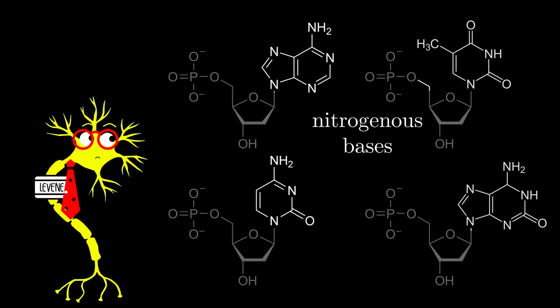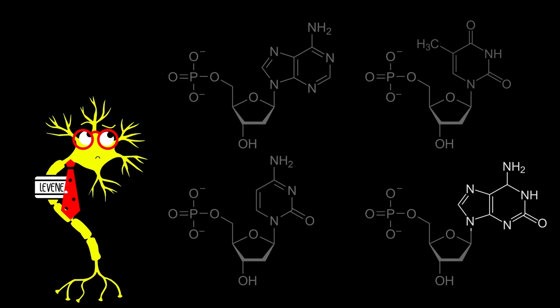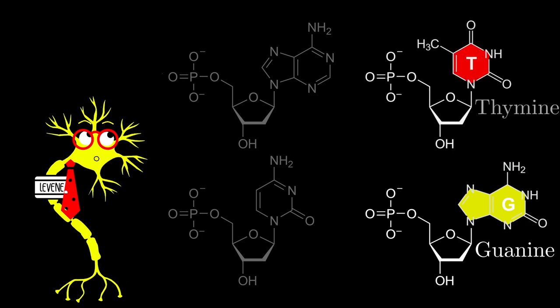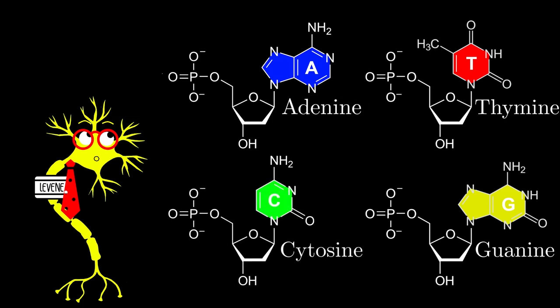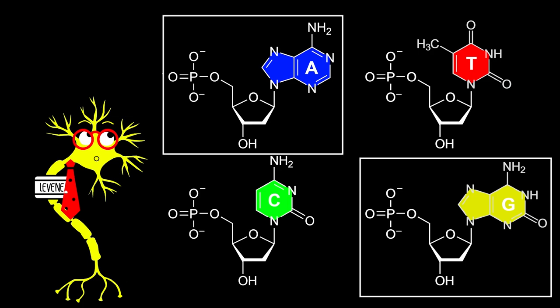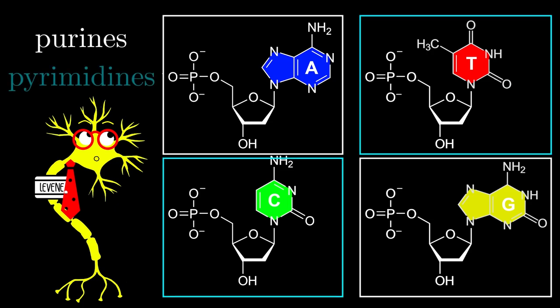But this time, Levine was late to the party, as these four bases had actually already been discovered and named. Yes, Levine was the first to find these bases in DNA, but these specific chemicals had already been discovered. This one was first discovered in bird poop, or guano, and was therefore named guanine. This one was found in the human thymus gland, and was thus named thymine. And this one was named adenine, and this one cytosine. So adenine, thymine, cytosine, and guanine are the four nitrogenous bases of DNA. And just another term that scientists use, these two nitrogenous bases that have two rings are referred to as purines, and these two are pyrimidines.